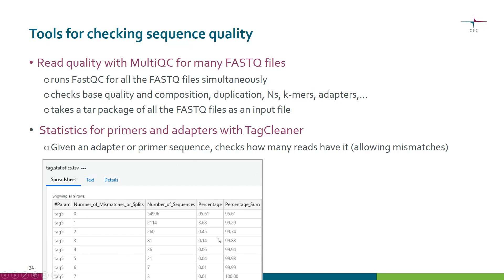As a result, you get a table showing, for example, that roughly 55,000 of your reads had a primer, and about 2,000 reads had it with one mismatch. So all in all, about 99% of reads had the primer, which means you will have to remove this primer from your reads before continuing the analysis.